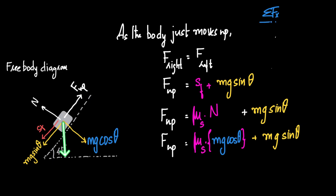Since the body is just moving up, the frictional force equals the maximum value of limiting friction: μ_s times N, which equals μ_s times Mg cos θ. Therefore, F_up equals μ_s · Mg cos θ + Mg sin θ.